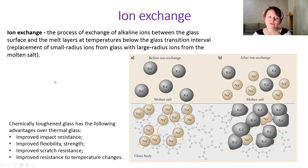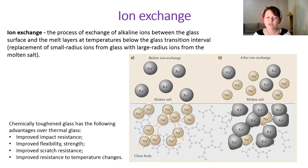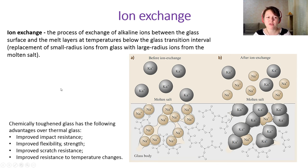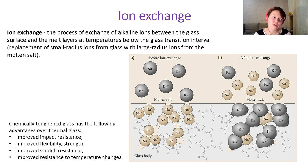Chemically toughened glass has the following advantages over thermally toughened glass: improved impact resistance, improved flexibility strength, scratch resistance, and improved resistance to temperature changes. This toughening method is used in screen glasses for smartphones, televisions, and so on.